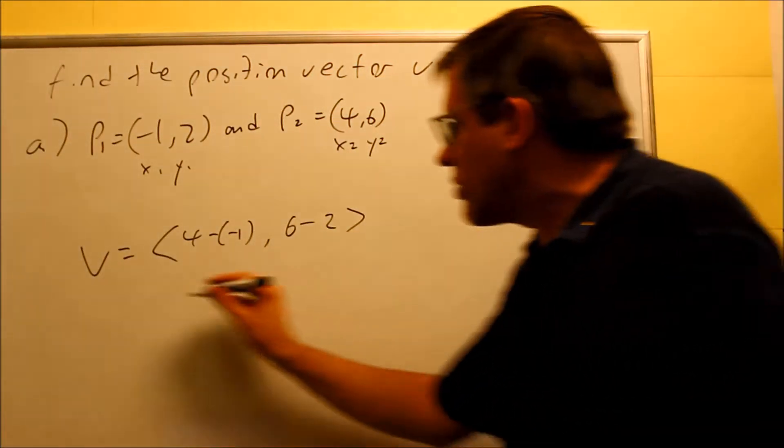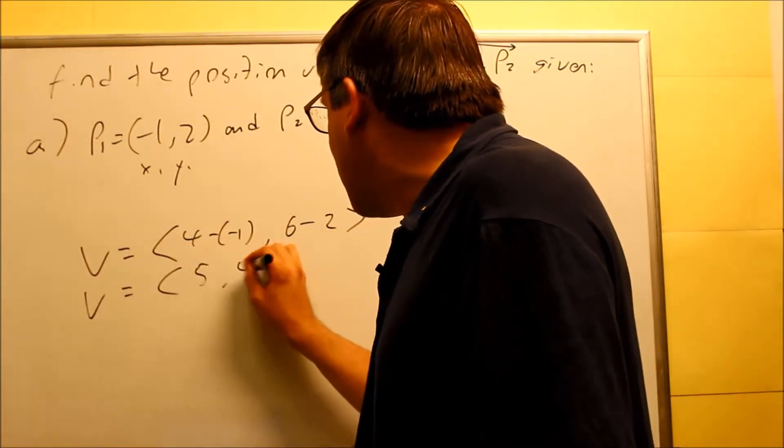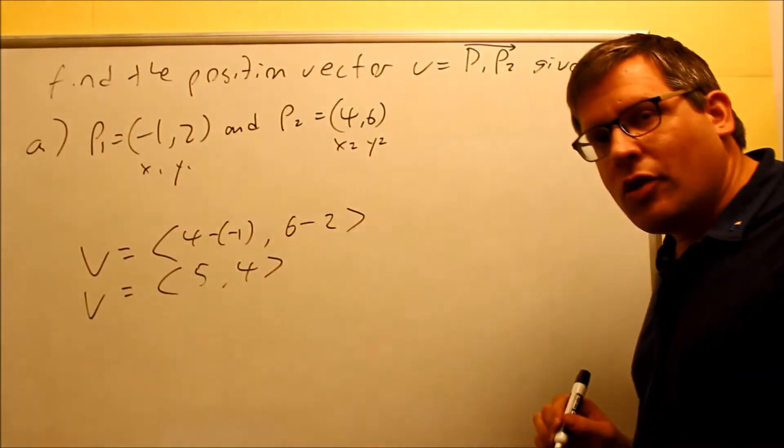That's your X2 minus X1, and we have Y2 minus Y1. And now we just want to simplify this. So when you simplify, you get 5 and you get 4.